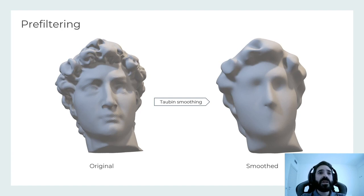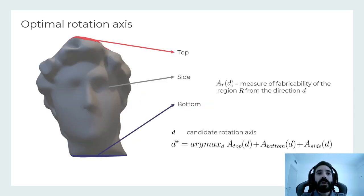First, we remesh the input model to obtain a regular and uniform tessellation and remove high-frequency details by performing iterations of Taubin smoothing. In this way, we sacrifice exact fidelity to the input for faster and more natural fabrication, since we avoid decomposition into an excessive number of charts. After segmentation, the frequency detail will be reintroduced while enforcing fabrication constraints. Note this is optional and the number of iterations is chosen by the user.